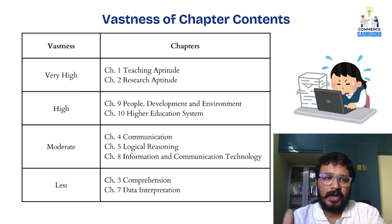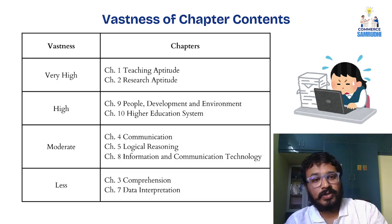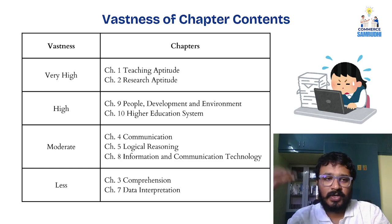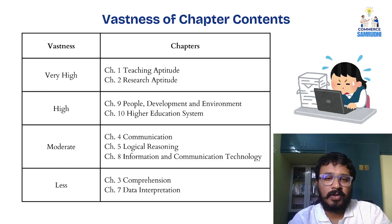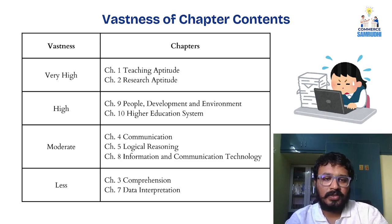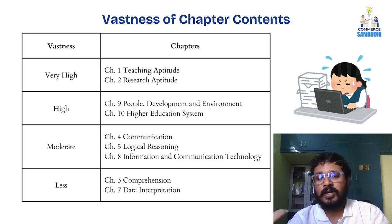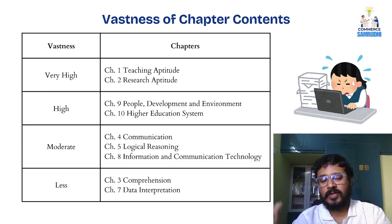Then the high category — we have the last two chapters. The first two chapters are very high; high are the last two chapters. Chapter 9: People, Development and Environment. Chapter 10: Higher Education System.